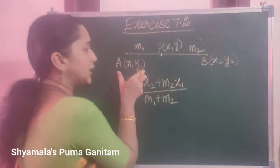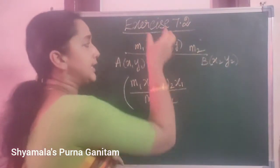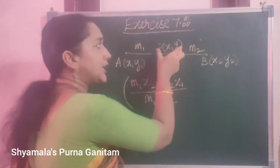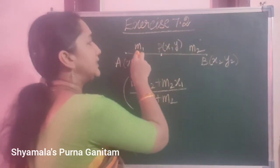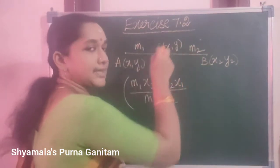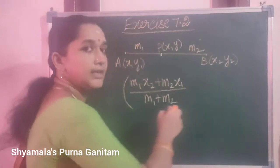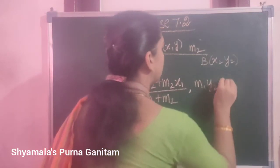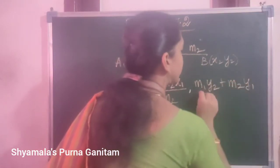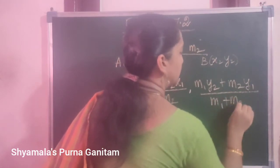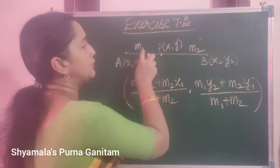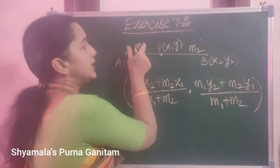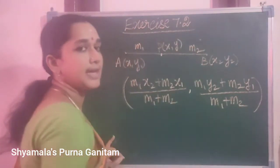So this is a line segment with coordinate points X1, Y1 and X2, Y2. It is divided in the ratio M1:M2. When P is the point that divides the line segment in the ratio M1:M2, P point is (X, Y). That X, Y value only we are finding using the section formula. So M1·Y2 plus M2·Y1 divided by M1 plus M2 — this is the section formula when using M1:M2 as the ratio.